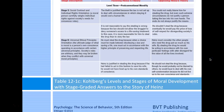Level three, post-conventional morality—Kohlberg's top tier of moral understanding. Stage five is social contract and individual rights orientation: a moral person carefully weighs individual rights against society's need for consensus rules. In favor: the theft is justified because the law is not set up to deal with circumstances in which obeying it would cost a human life; or it is more reasonable for him to steal the drug than to obey the law in this case.